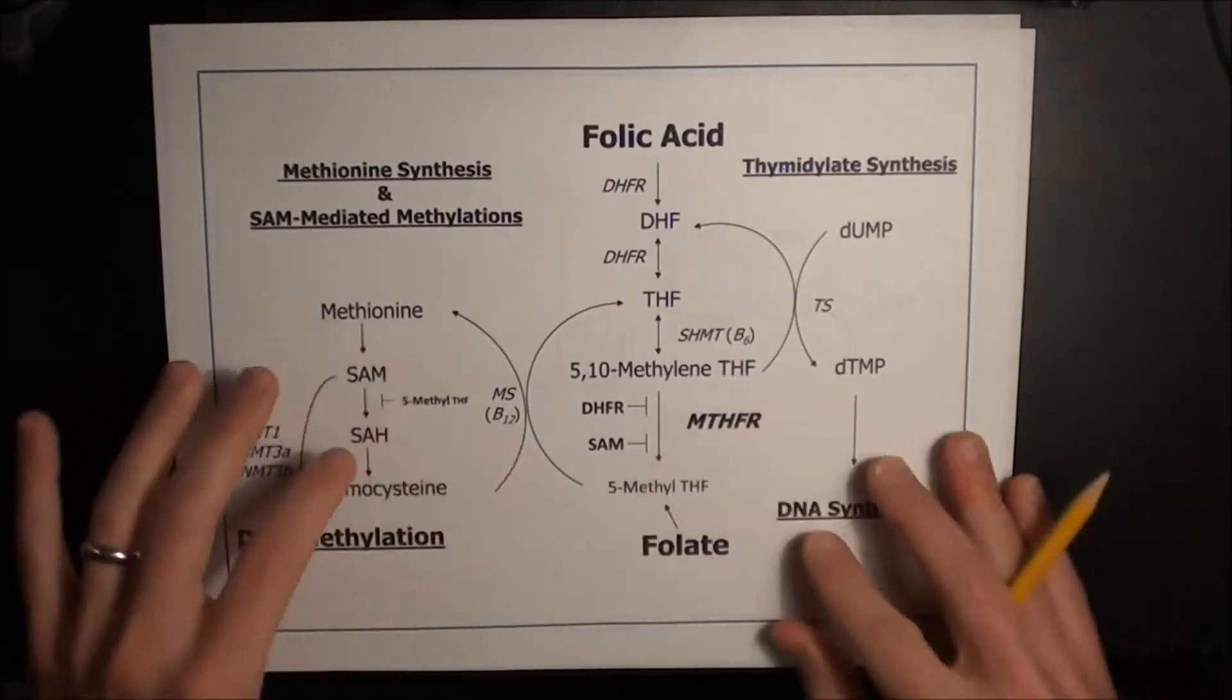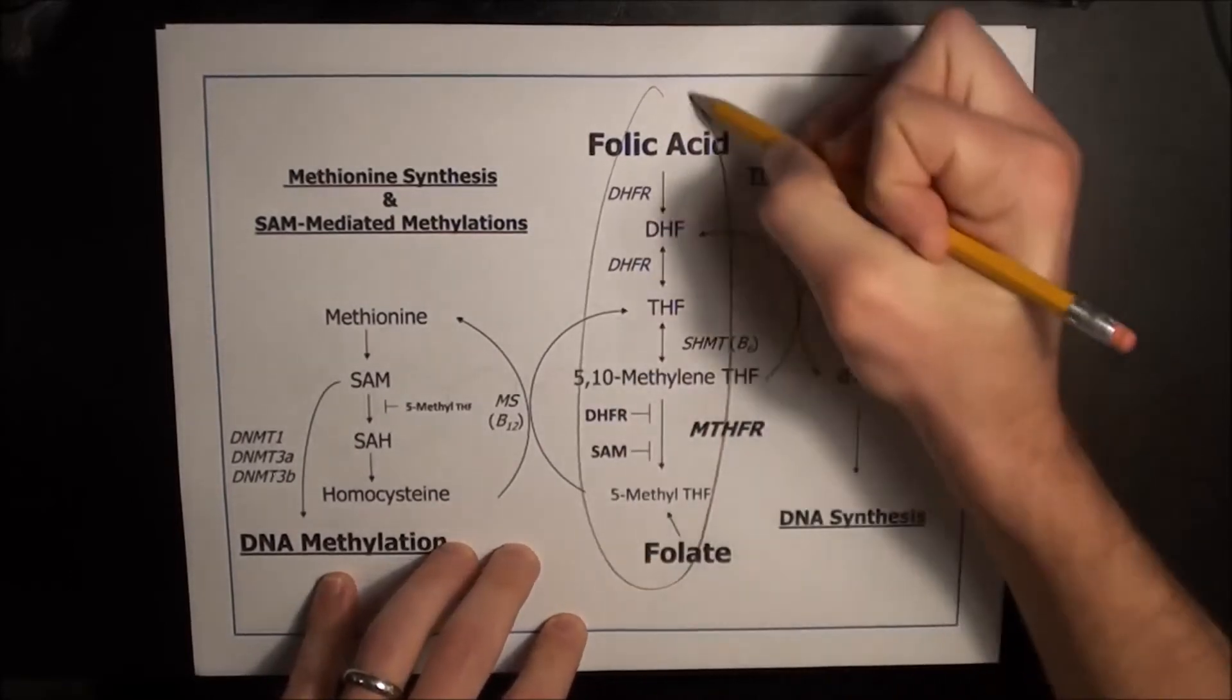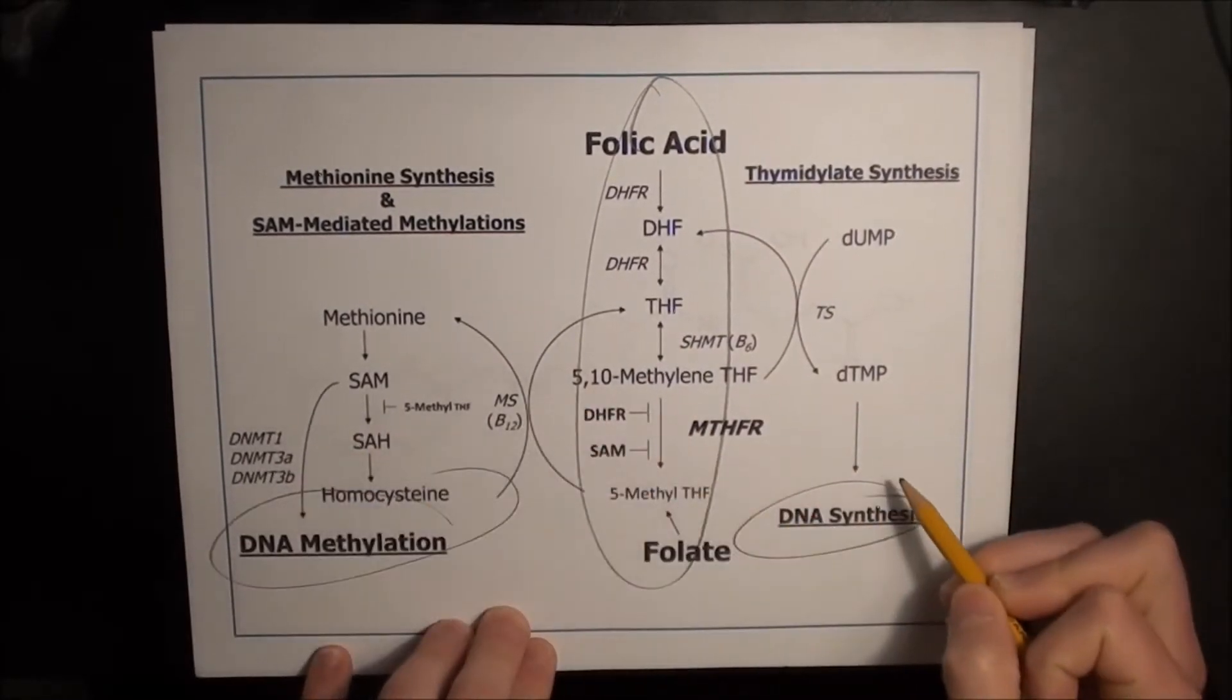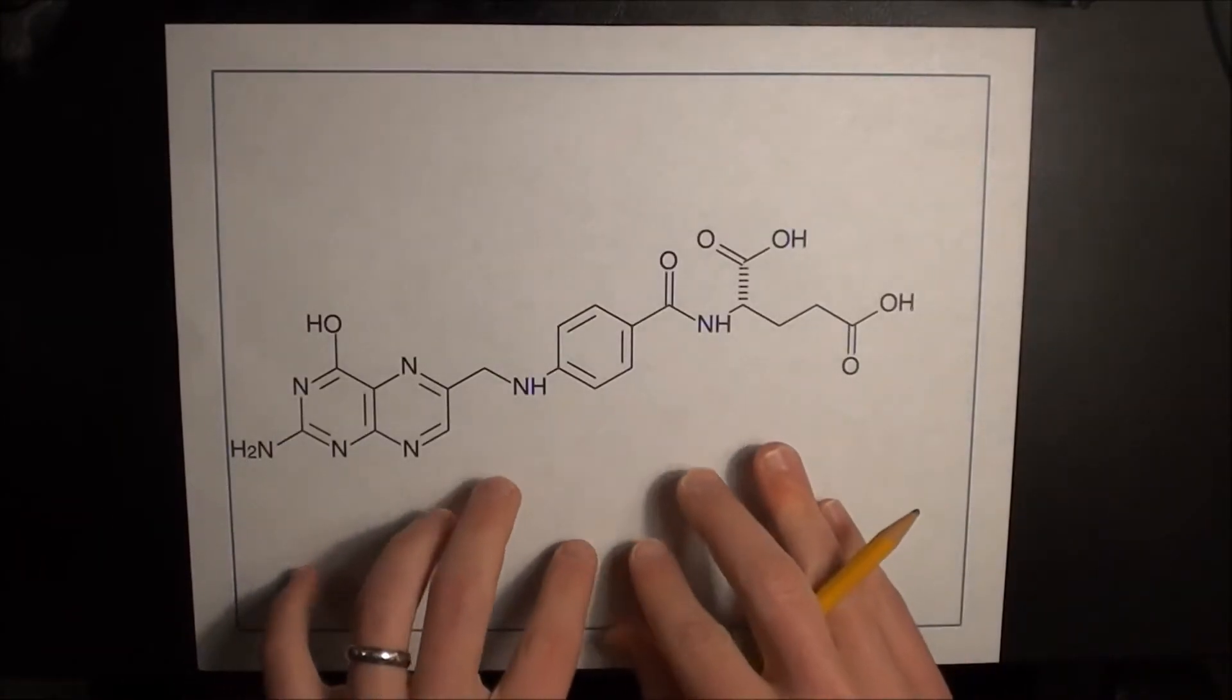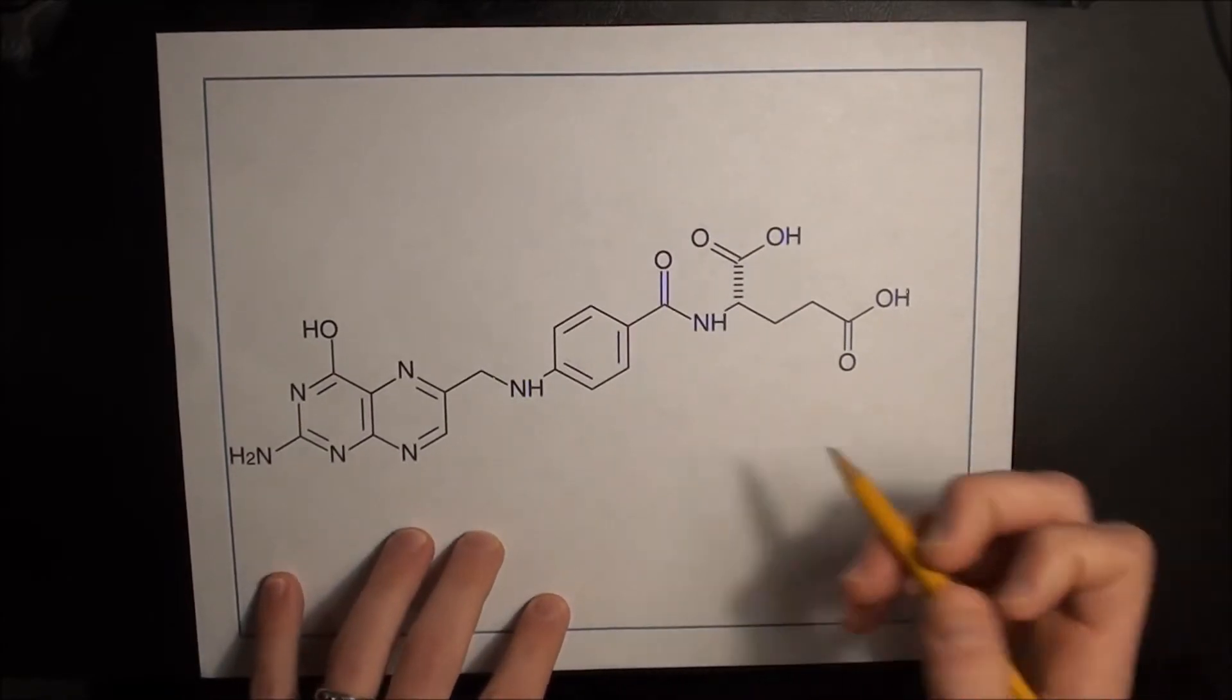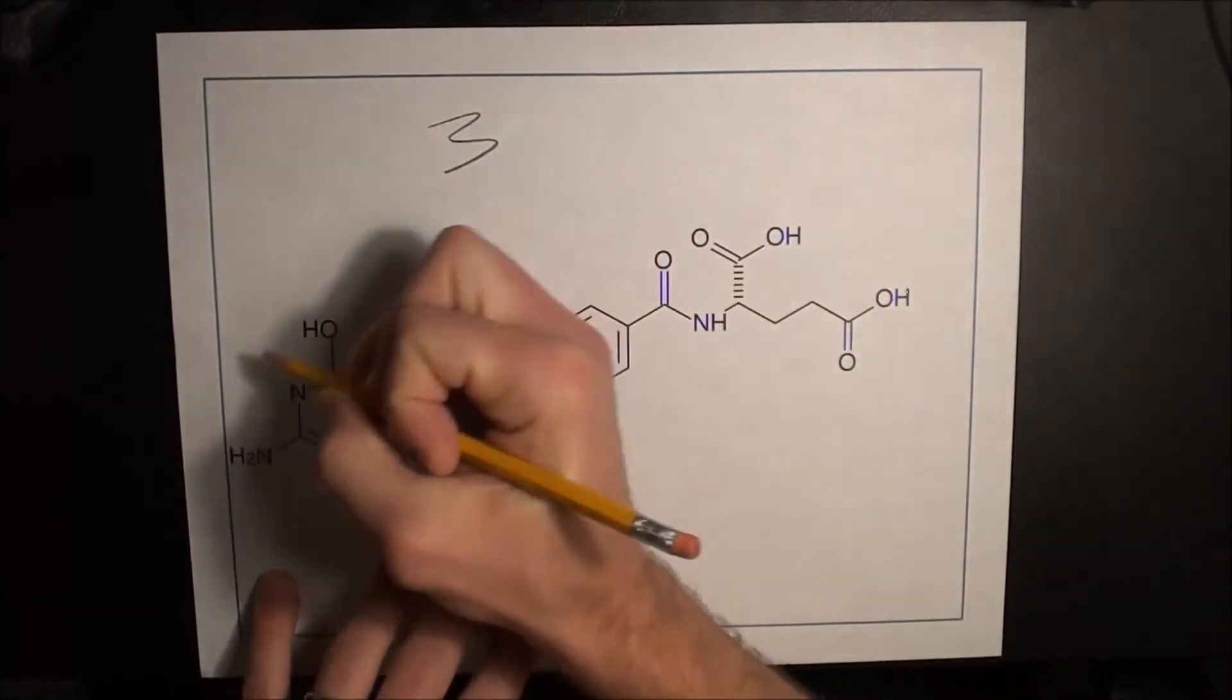So here, as we showed in the previous video, is how folic acid is used to create DNA. And this is the molecule of folic acid that we looked at. And what you'll notice is that folic acid is composed of three major groups.